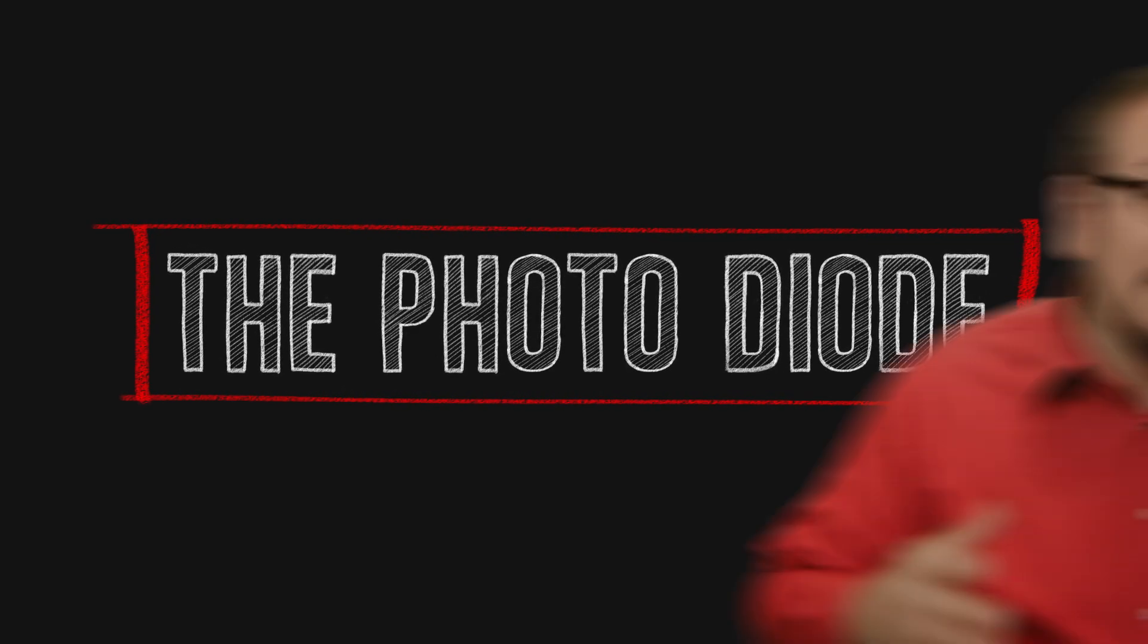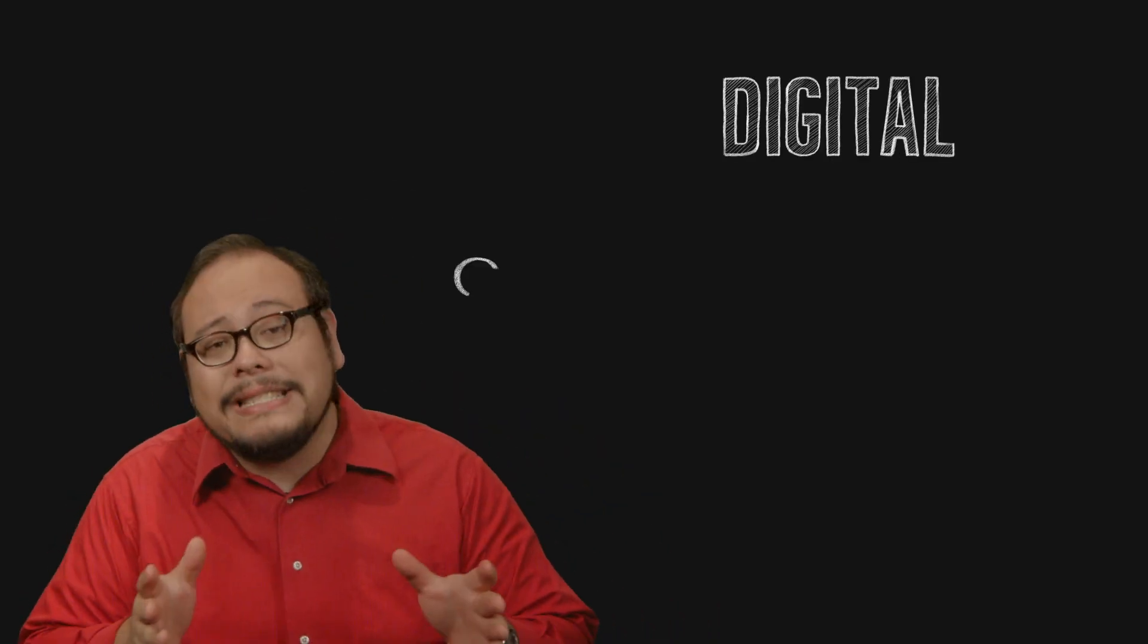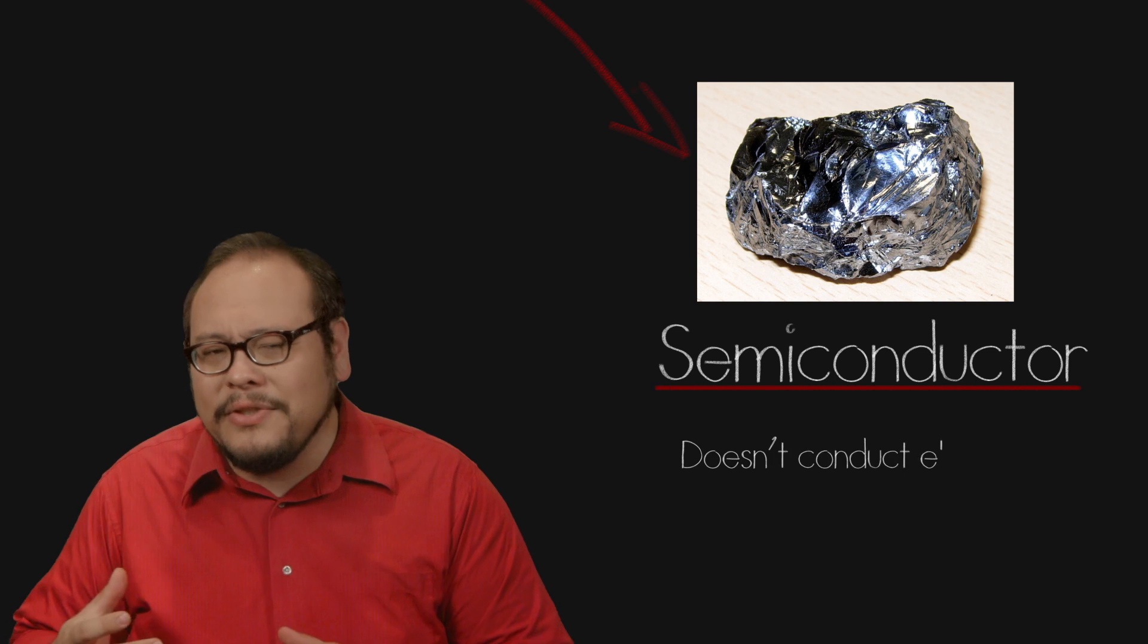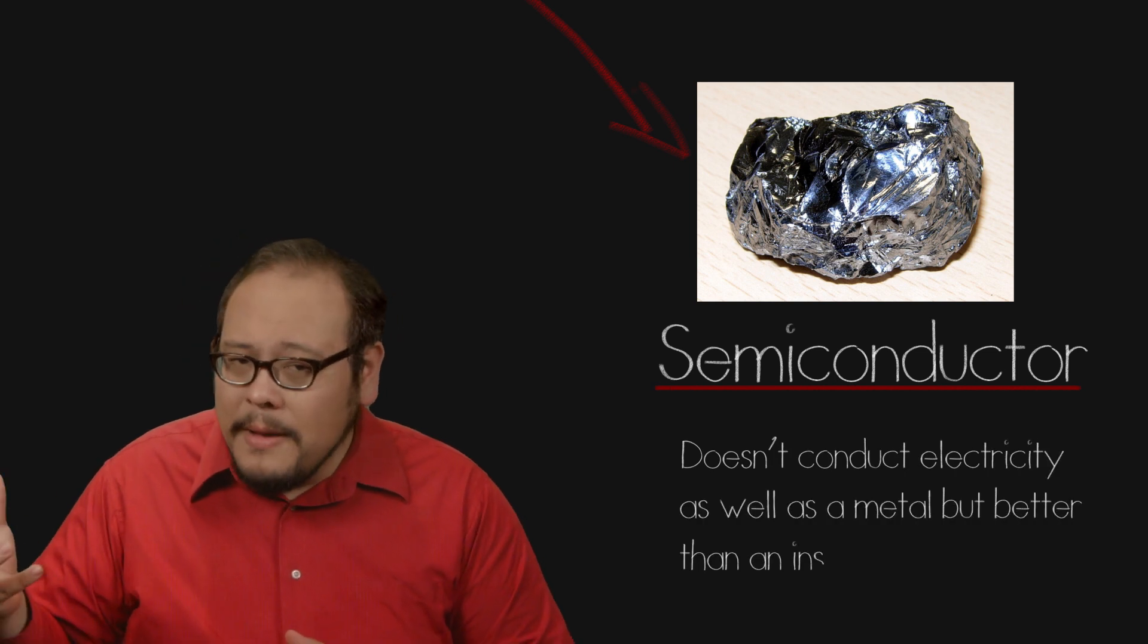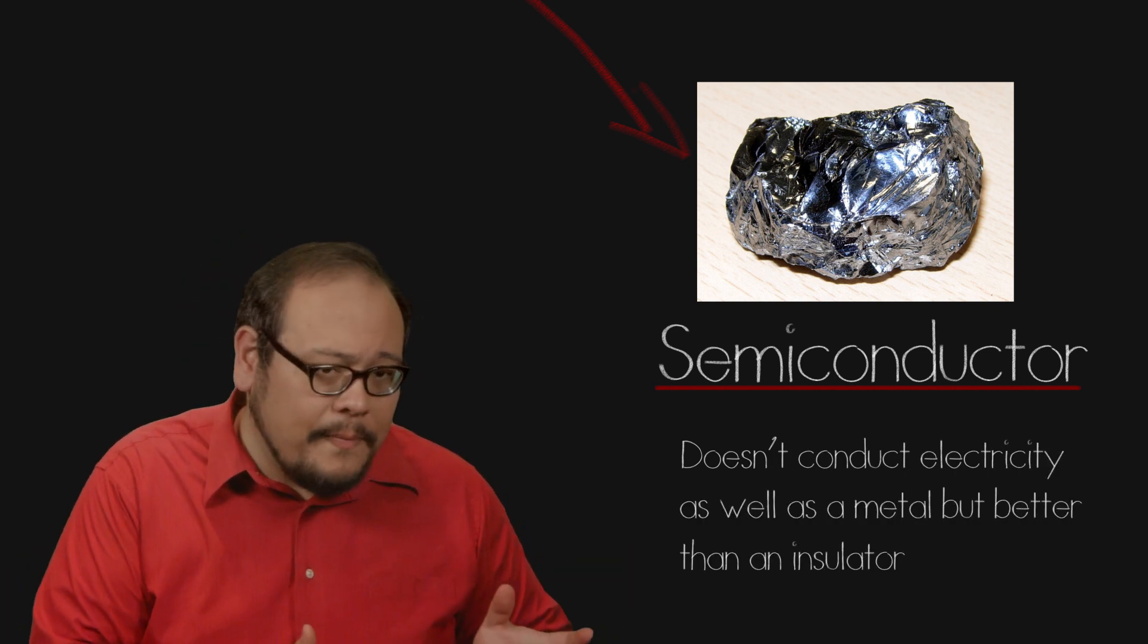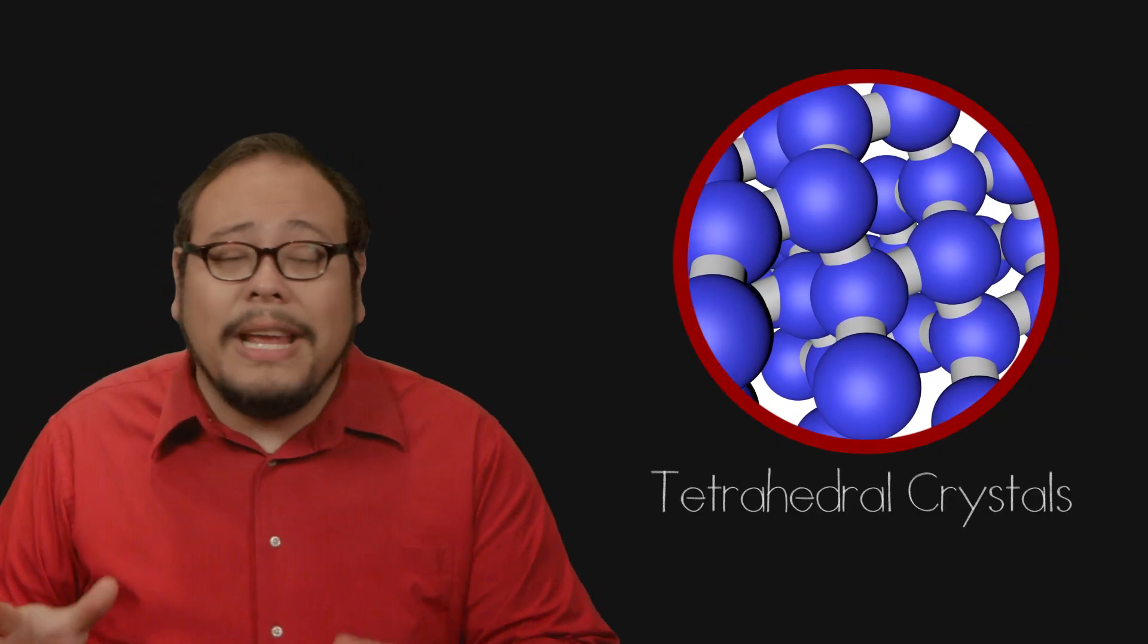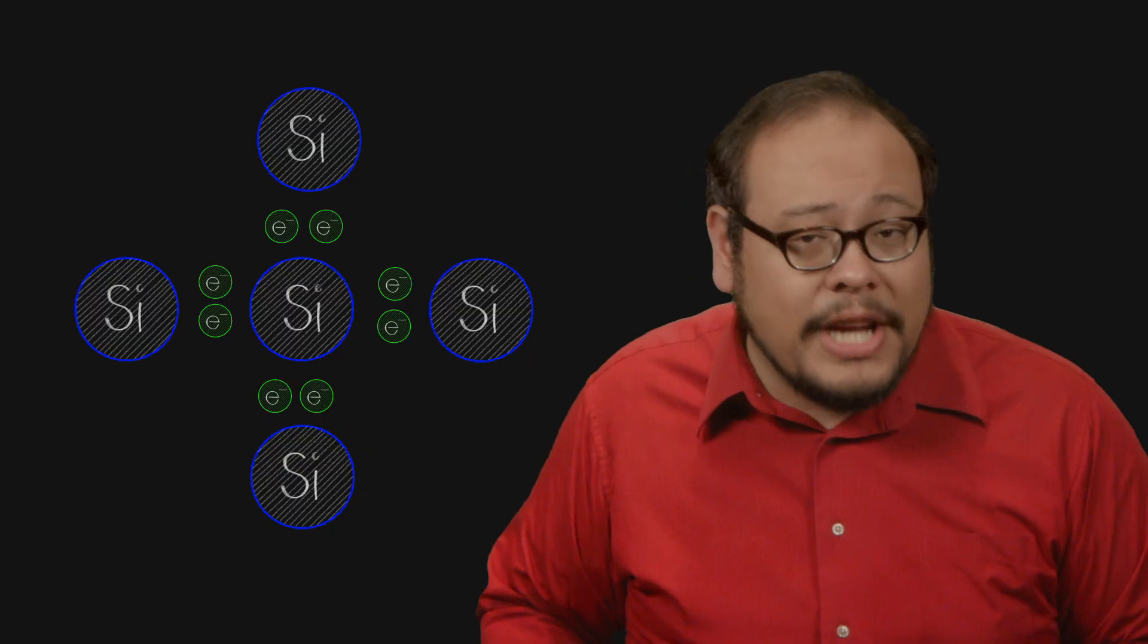As silver halide is the key chemical that makes film possible, silicon is what makes digital possible. Silicon is a semiconductor, meaning it doesn't conduct electricity as well as a metal but it conducts better than insulators. This is because silicon has 4 electrons in its outer or valence shell. This causes silicon to create tetrahedral crystals with other silicon atoms where each atom is satisfied with 8 electrons in its outer shell.